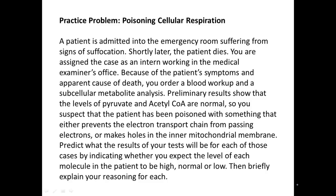Your preliminary results show that the levels of pyruvate and acetyl-CoA are normal. Because of this, you suspect that the patient has been poisoned with something that either prevents the electron transport chain from passing electrons, or with something that makes holes in the inner mitochondrial membrane, because either of those are consistent with these normal levels of pyruvate and acetyl-CoA. You're asked to predict what the results of your test will be for each of those cases by indicating whether you expect the levels of some metabolites to be high, normal, or low — in other words, generating predictions based on these two hypotheses.